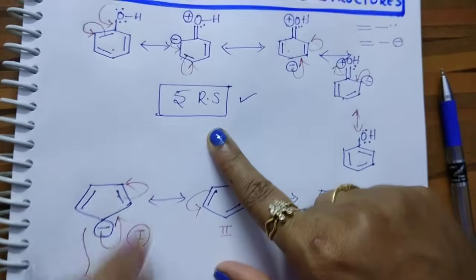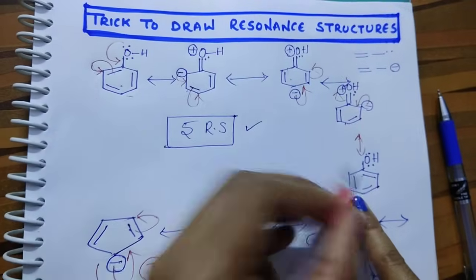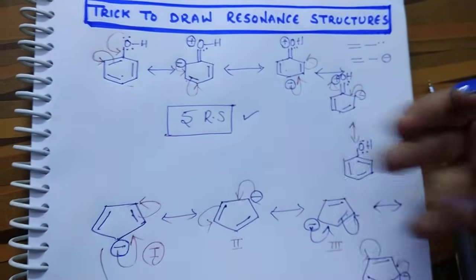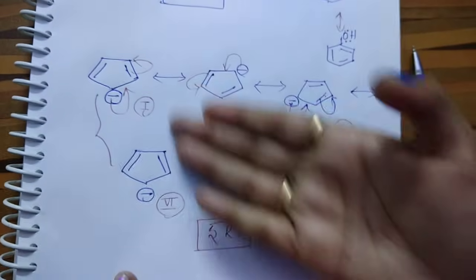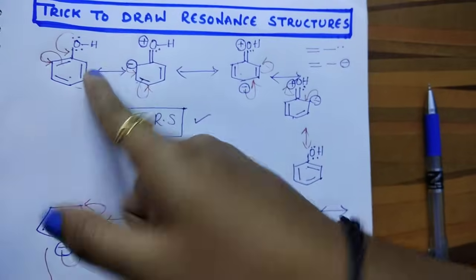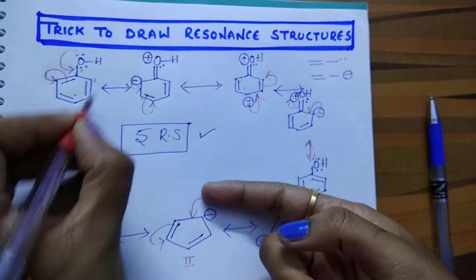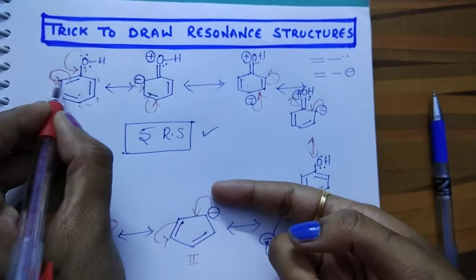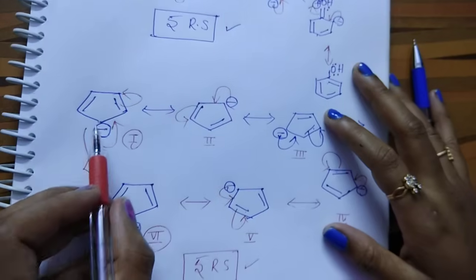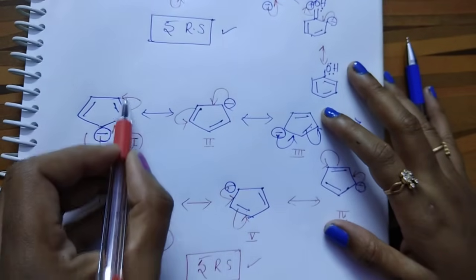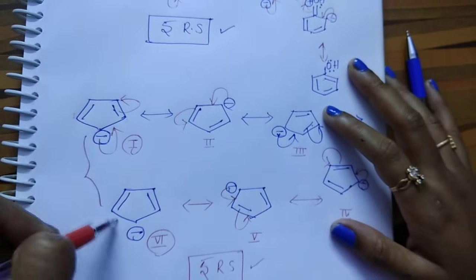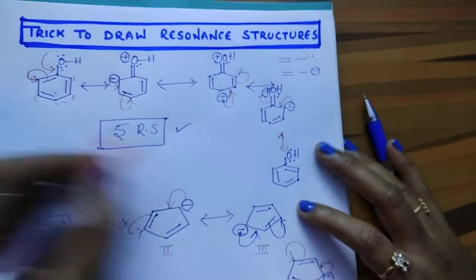You may have the doubt: why are the first and fifth structures not taken as similar in the case of phenol, but they are taken as similar in this case? Because here both are the same. If you observe phenol, the bonds are present — suppose you give numbering, the bonds are present between positions one and six, but in the cyclopentadienyl case, if you give the numbering in the same direction, the bonds are present in the same places. That's why these two are the same, but in phenol they are not.